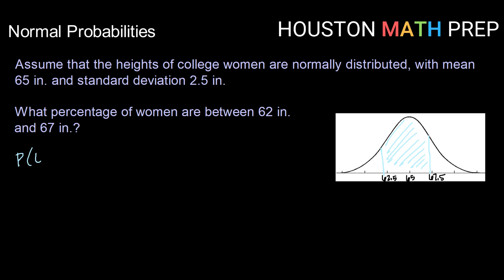So our probability of being between 62 and 67 in this distribution can be calculated using normal CDF of our lower bound is 62, our upper bound is 67, our mean is 65, and our standard deviation is 2.5. So typing that in, we would get 0.6731. So about 67% of women would have a height between 62 and 67 inches.